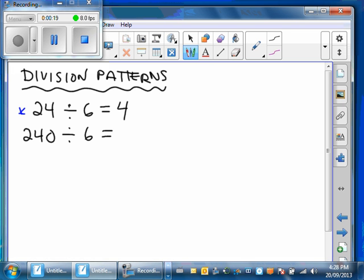What happens if we take 240 divided by 6? In that case, the answer is 40, and a pattern emerges. As long as 24 divided by 6 is still 4, all we need to do is count the zeros and add them at the end.